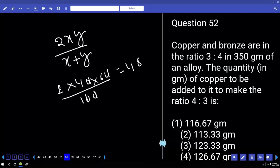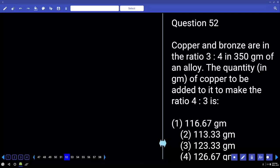48. 52. Ready? Copper and bronze are in the ratio 3 to 4 in a 350 gram of an alloy. The quantity of copper to be added to it to make the ratio 4 is to 3. Initial quantity of alloy is 350 grams. And in that alloy the metals are copper and bronze. Copper is of 3 parts. Bronze is of 4 parts. 3 plus 4? 7 parts. 7 parts are 350. 1 part is 50. 3 parts are? So, there is 150 grams of copper and 200 grams of bronze. Am I right?